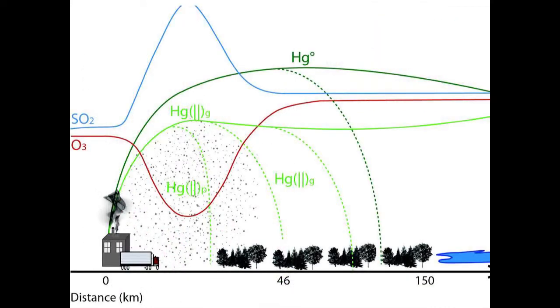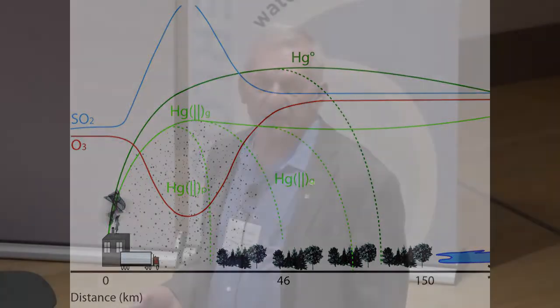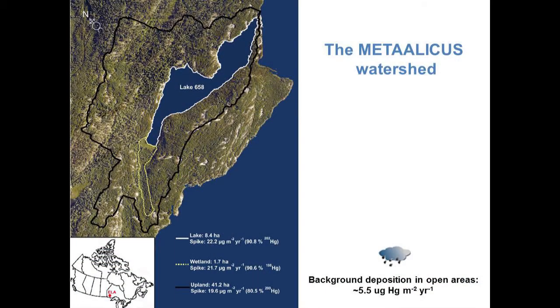That takes us on to mercury, which is one of many toxic metals of concern, but probably worse than most because it has a very complicated geochemistry. It's also the source of more fish consumption advisories in the US and Canada than any other single chemical. Mercury exists in ionic form — Hg²⁺ — which tends to fall back close to the source within 40 or 50 kilometers, and also in a gaseous form that can travel between continents.